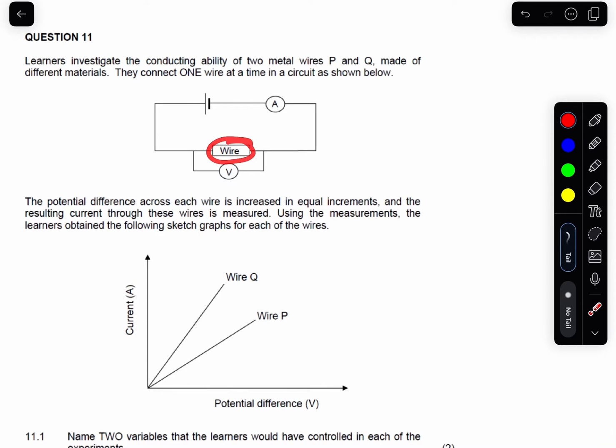So they connect the wire here to check the conductivity. We have an ammeter there, a cell, and a voltmeter. So here's the result. The result of these wires, two different wires, illustrated in a graph. It says the potential difference across the wire will increase in equal increments, resulting in the current through these wires measured using measurements. The learners obtained the following sketch graph for each of the wires.